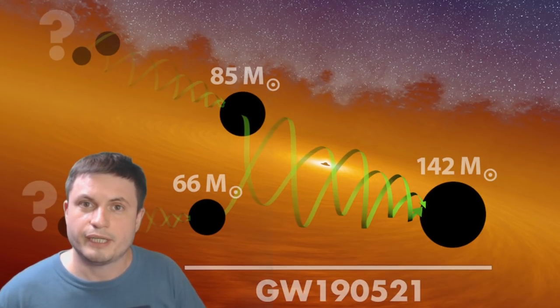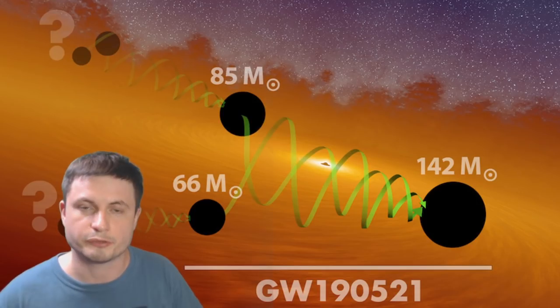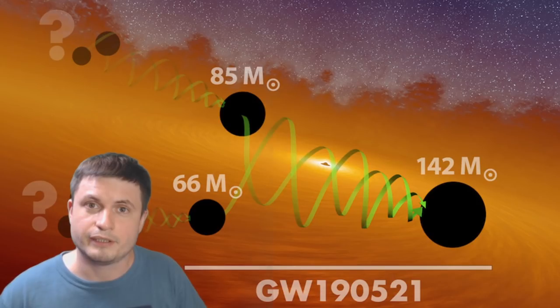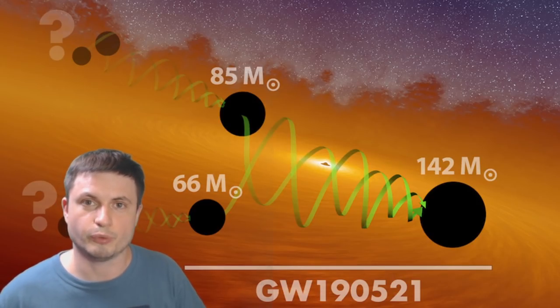resulting in the total mass of 142 masses of the Sun. This of course means that, first of all, it created the mysterious and never-before-seen intermediate mass black hole that we only suspected existed based on some other observations. And at the same time, we now note that these so-called impossible mass black holes can exist as well.